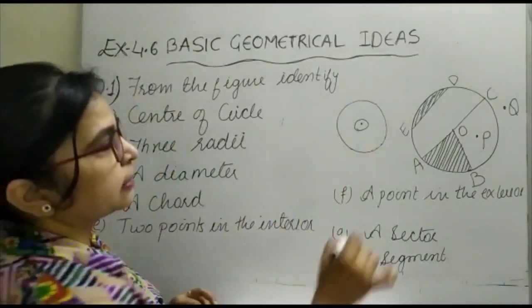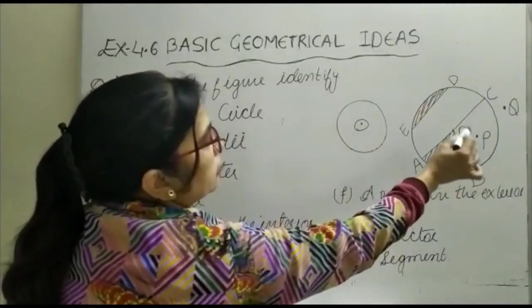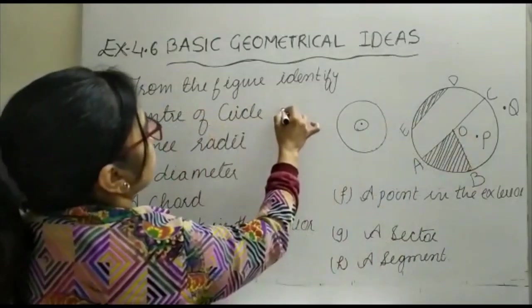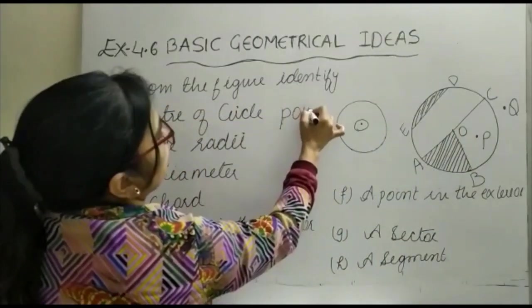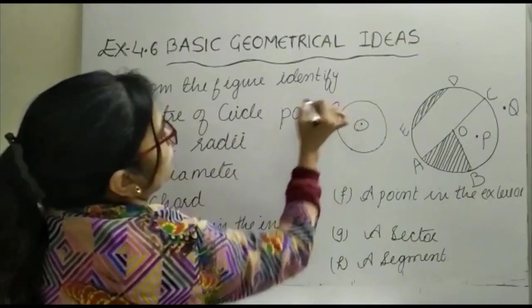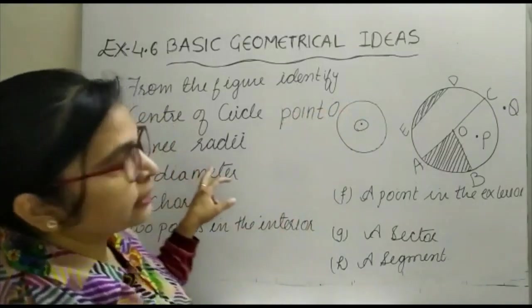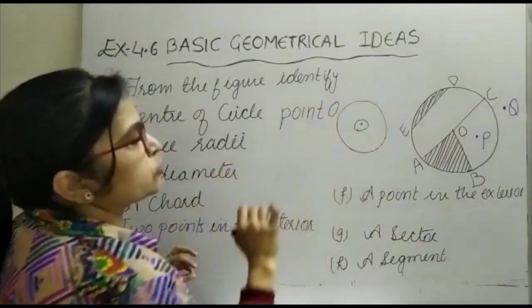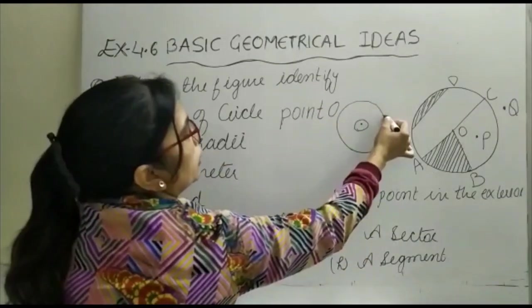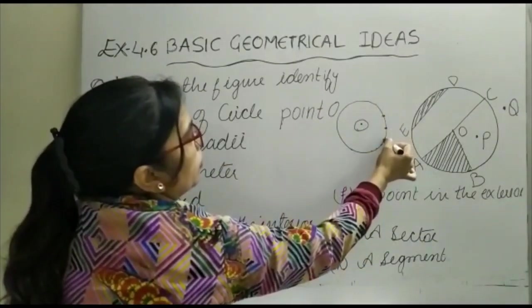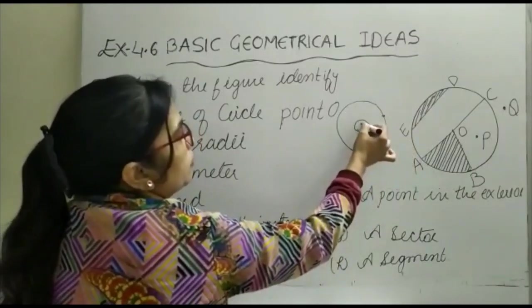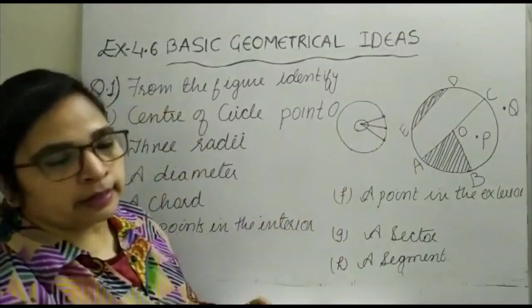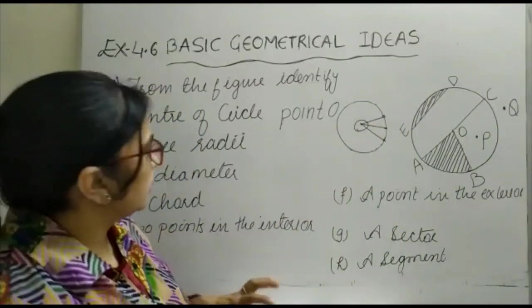The center of the circle is point O. Now, the next thing is three radii. Let us understand what is radius. In any circle, when you join a point on the circumference to the center of the circle, that is the radius, and all radii are equal.